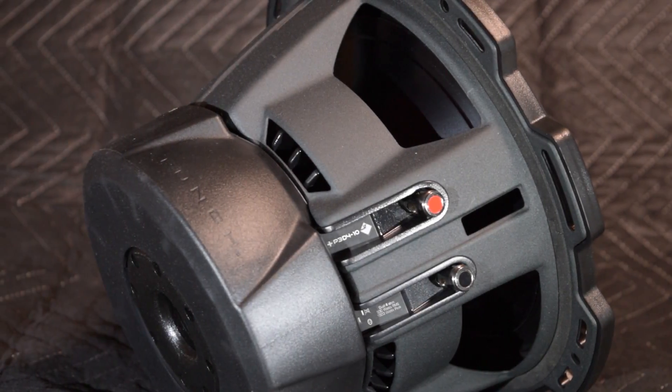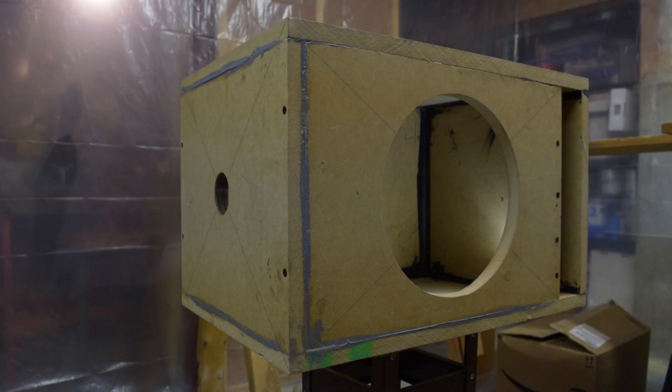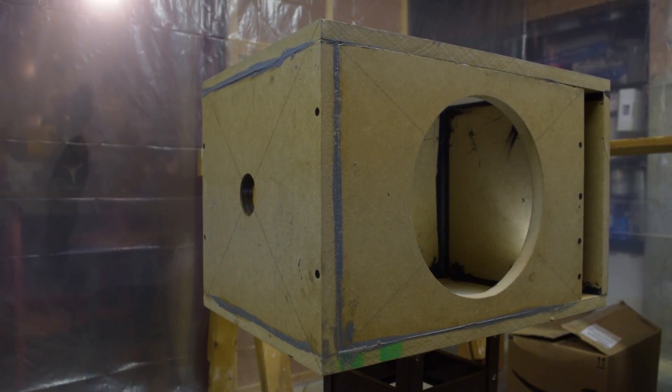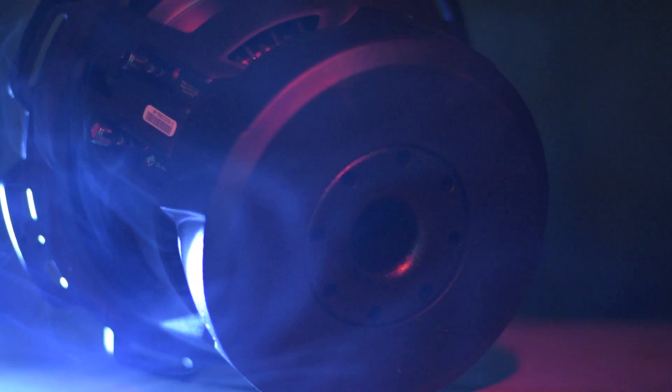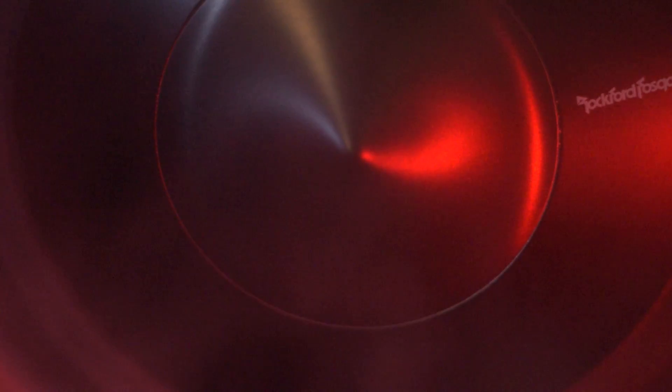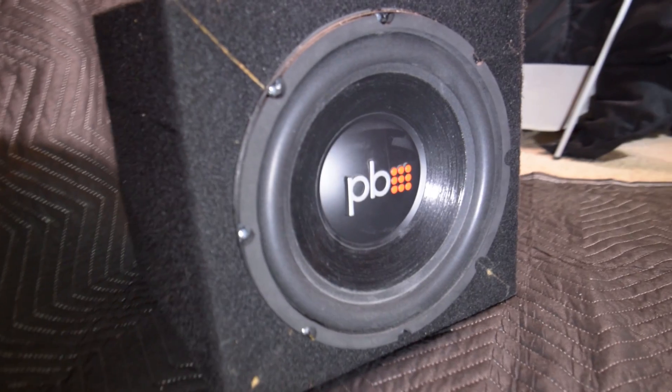When getting a subwoofer, one thing you will need to go with it is an enclosure. The reason you need a sturdy box for a sub is because the sound waves coming off the back of the cone can somewhat cancel out the ones coming off the front. So putting the subwoofer in a properly built enclosure allows it to be much more efficient, which will give you a lot more bass.